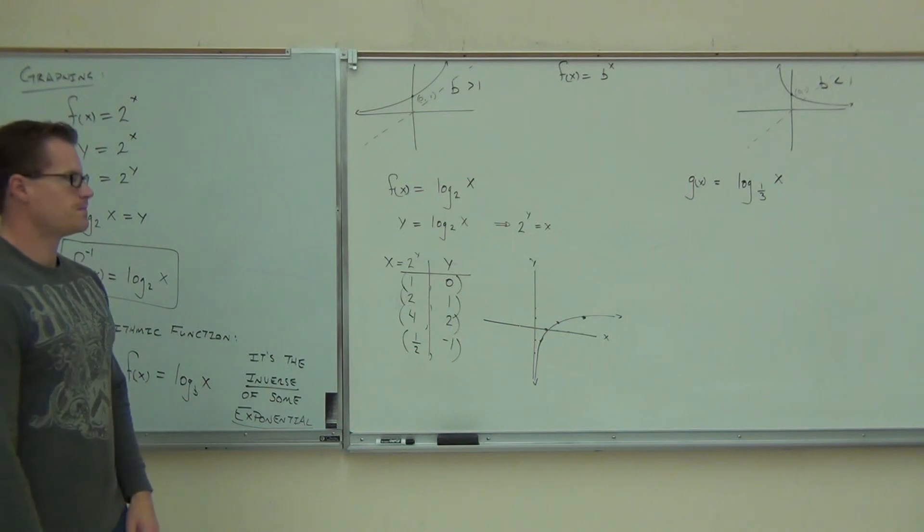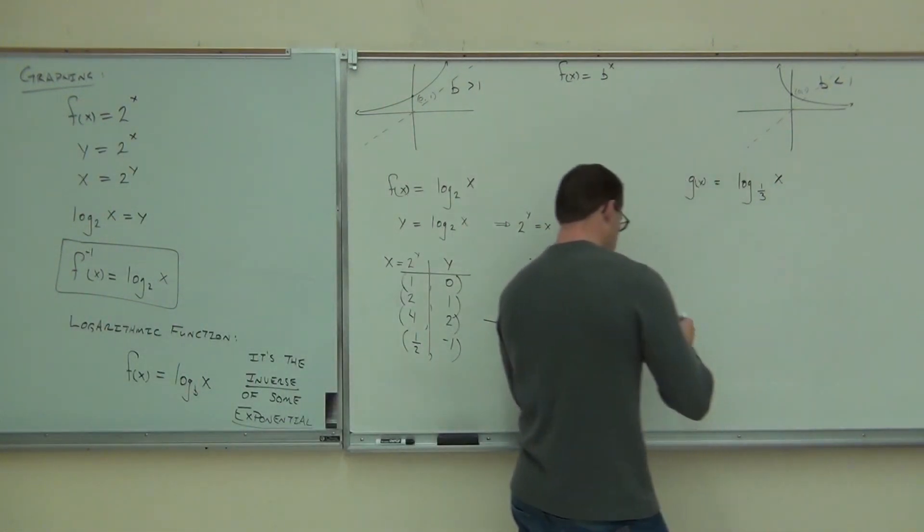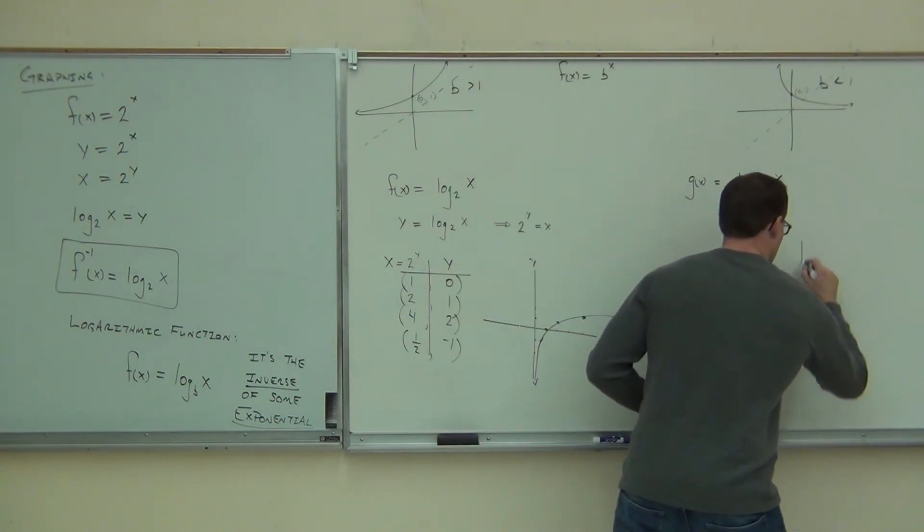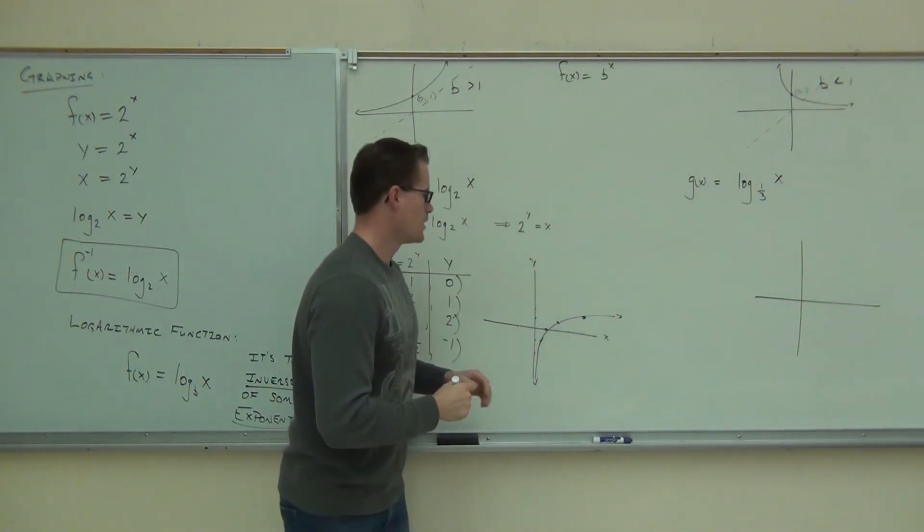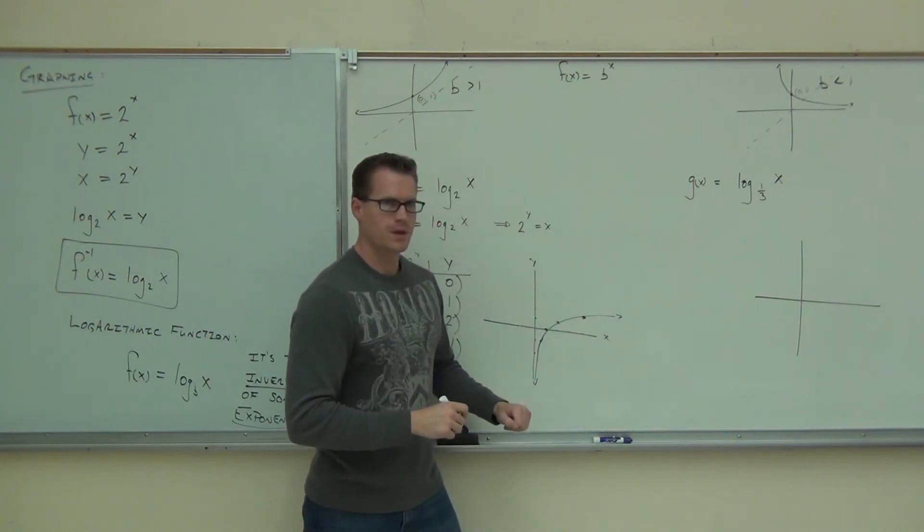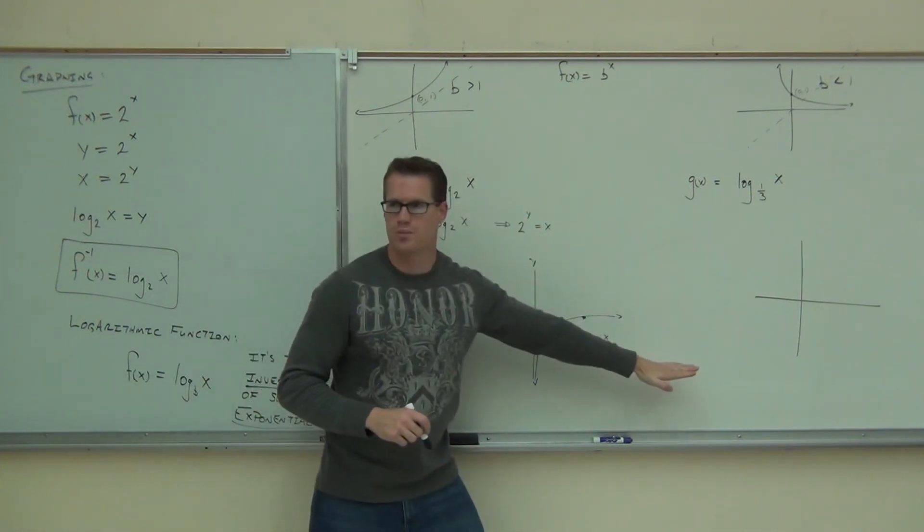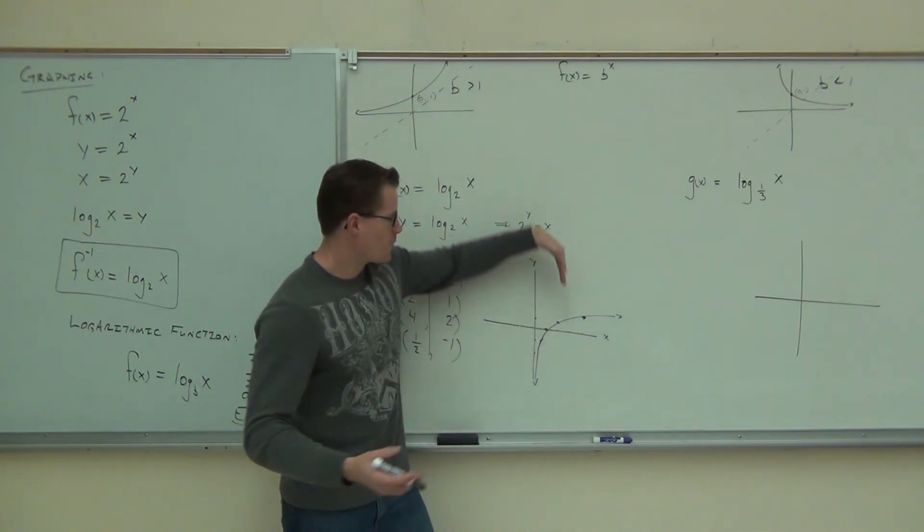For b greater than 1. We're running out of time, so I'm not going to be able to do this one the whole way through here. If this is my logarithm with b greater than 1, do you see how we're going to have this one for b less than 1? So b is always greater than 0, it's never going to be negative, but I'm going to have this graph.